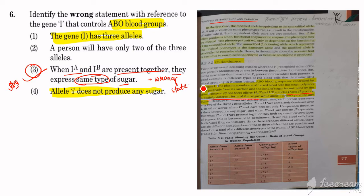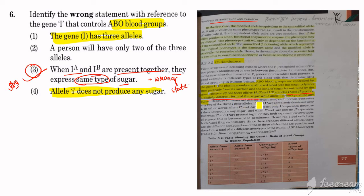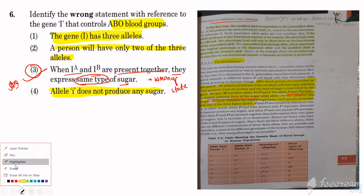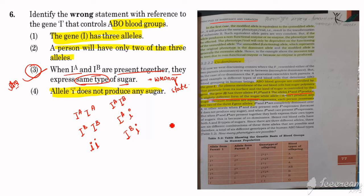Because I-A and I-B express different types of sugar. Also confirming option 2: since humans are diploid, each person possesses any two of the three alleles. The possible combinations include I-A I-A, I-B I-B, ii, I-A I-B, I-A i, or I-B i — these are the probabilities. But only two of the alleles will be expressed, not three. So our answer is the third statement.